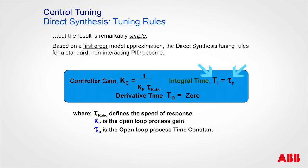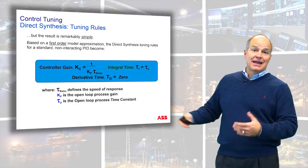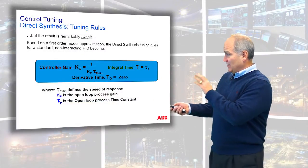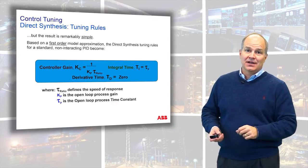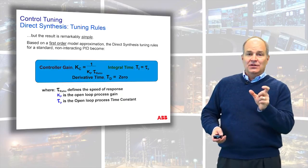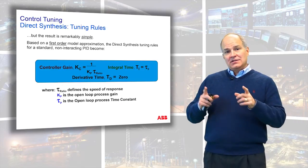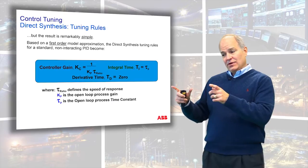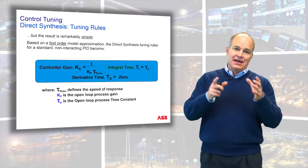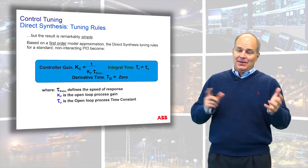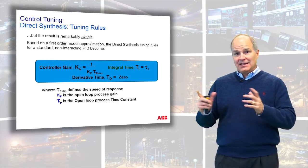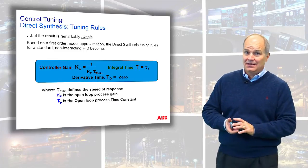The integral time and the process time constant are not just related — they're set equal. This is why I like the standard form of the PID algorithm. Once you identify the process time constant, that is your integral time. The units you use for process identification must match the units used for your controller. I've seen people off by a factor of 60 — mixing up one minute and 60 seconds without realizing it.